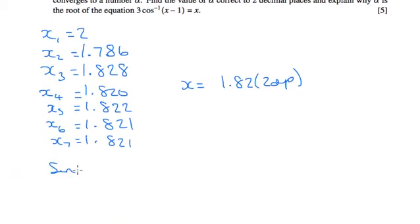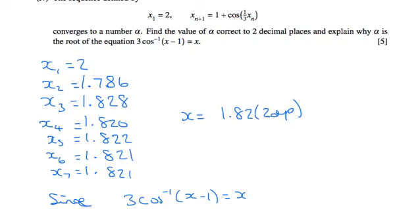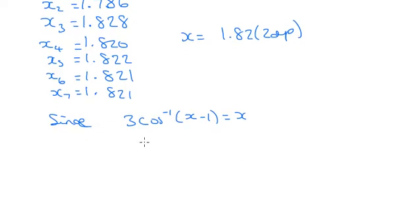Since 3 cos of x minus 1 equals x is the same as... how have they done that? Let's divide by 3.